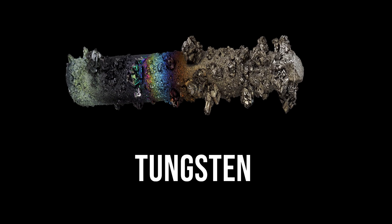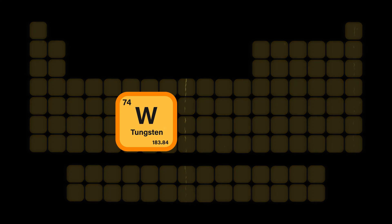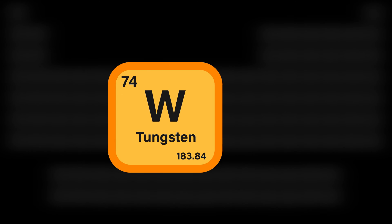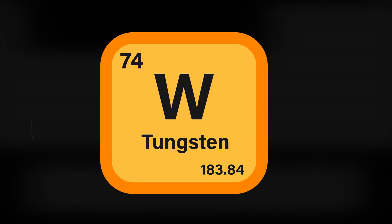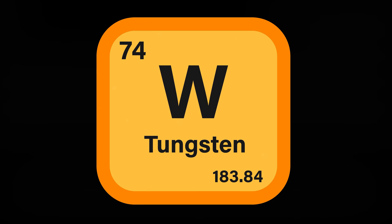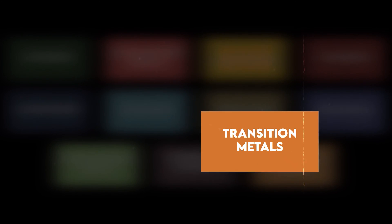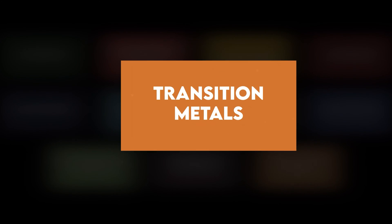This is tungsten. Tungsten, or wolfram as it is also called, is a chemical element with the symbol W and atomic number 74. It is a rare sixth-row transition metal in group six of the periodic table.